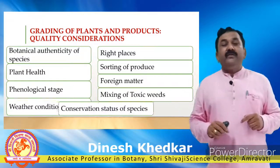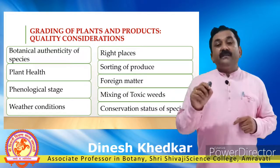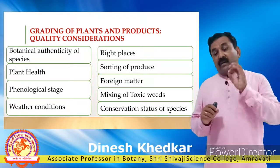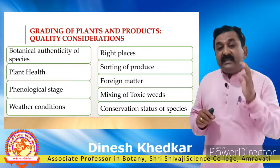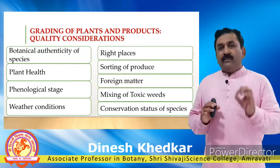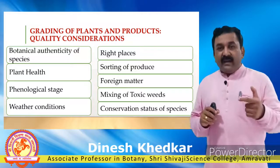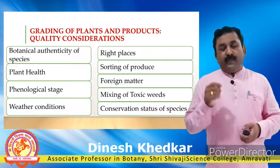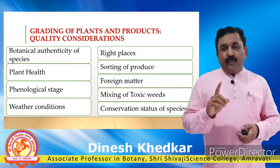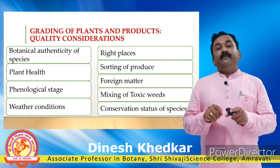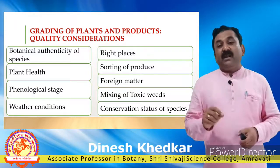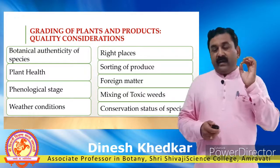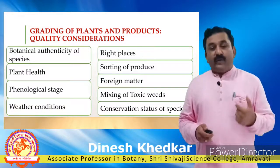Lastly, it is very important that you should take care of the conservation status of the species. If the plant with those properties is an endangered plant, then you should restrict its use because its conservation status is alarming. You should prefer all those plants which are readily available, heavily available, and abundant in any place — those should be our priority and should be the top-grade plants. These all nine parameters are the quality consideration parameters. Once you have gone through all these parameters and given a good quality remark to the plant, then this will be called the grading process.